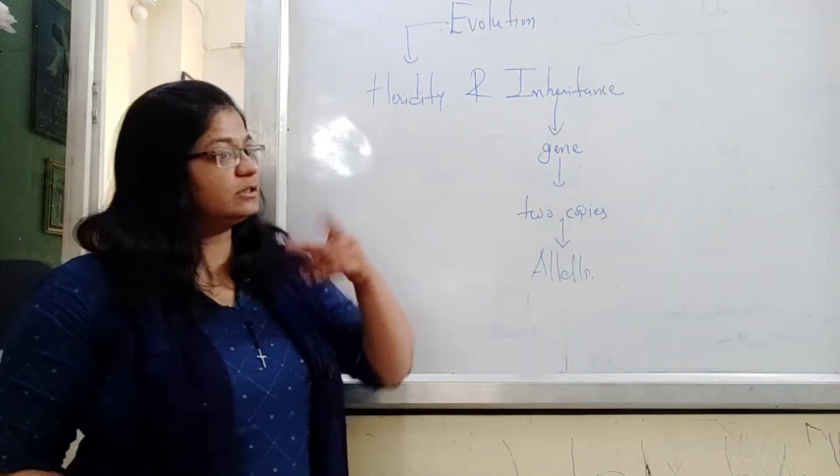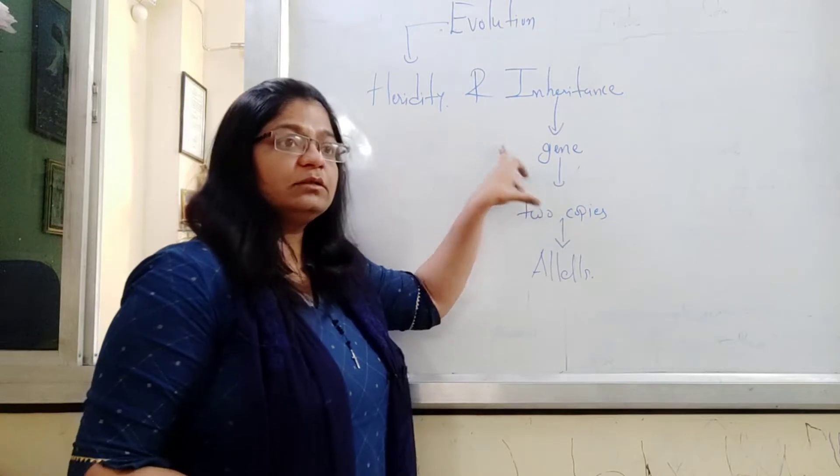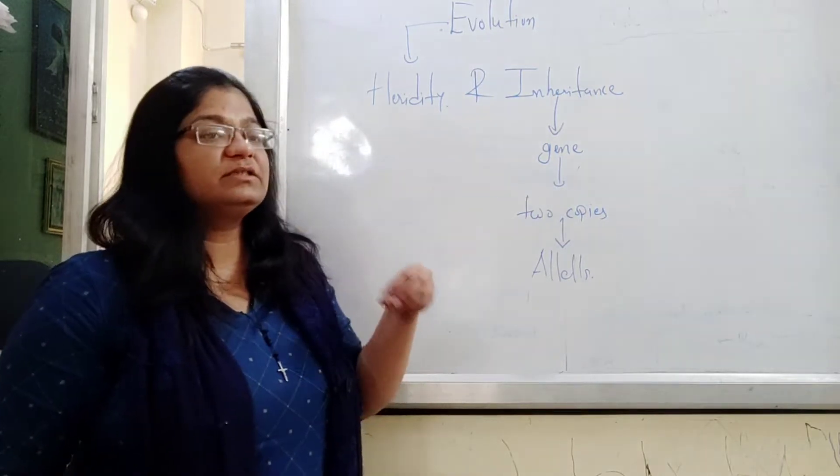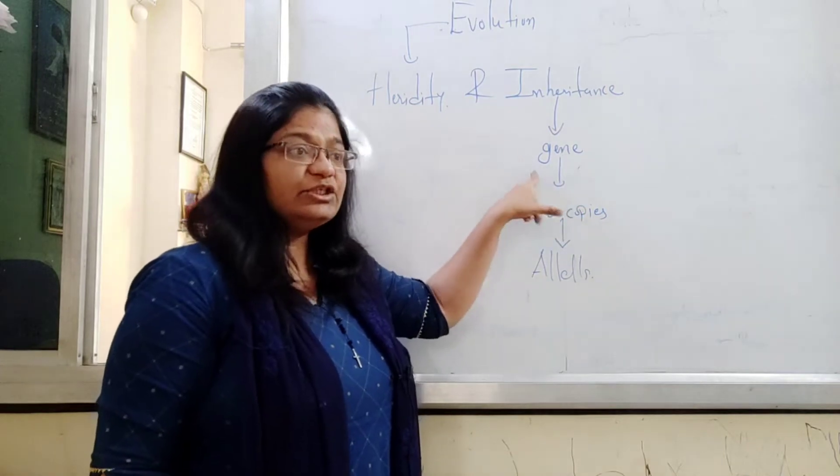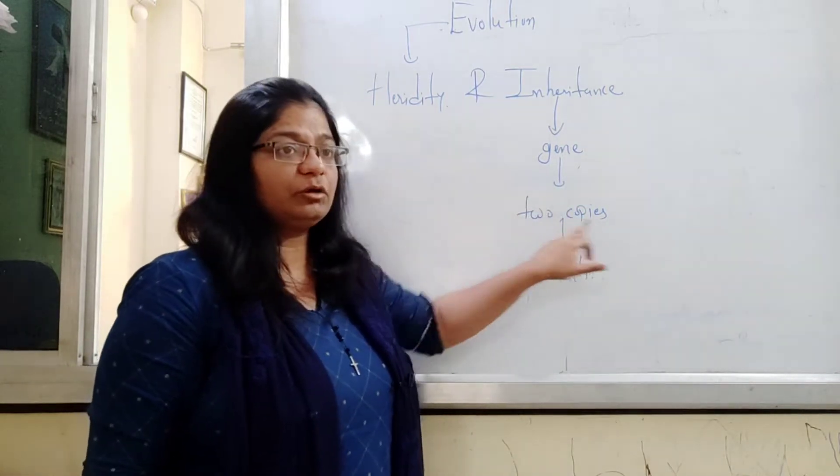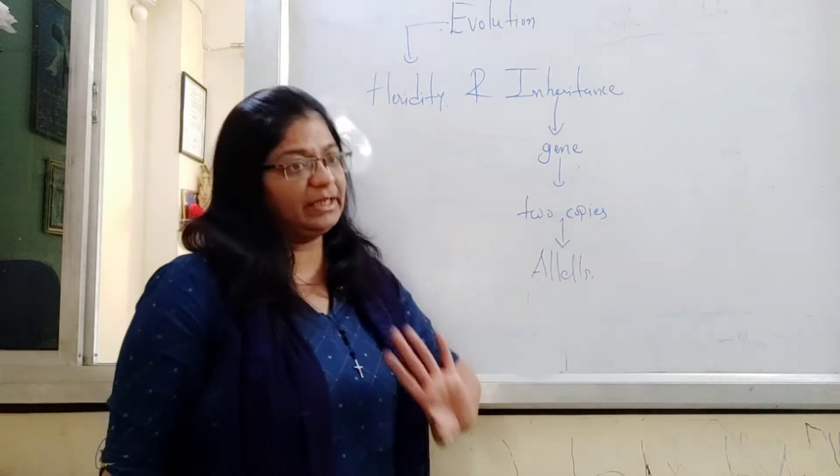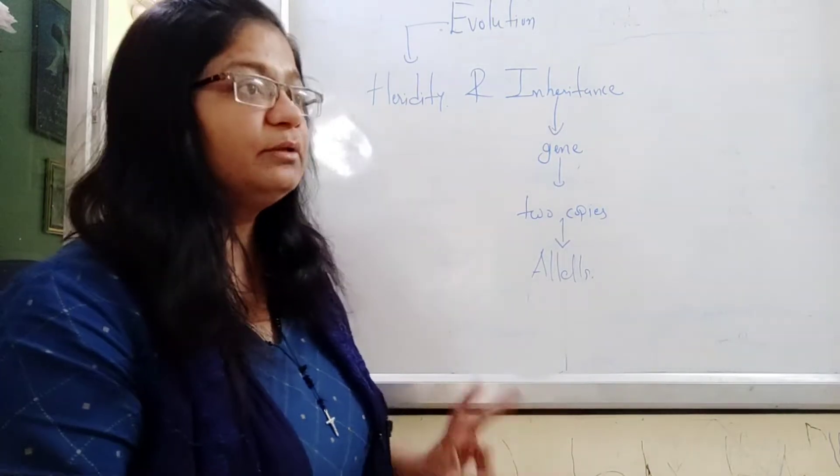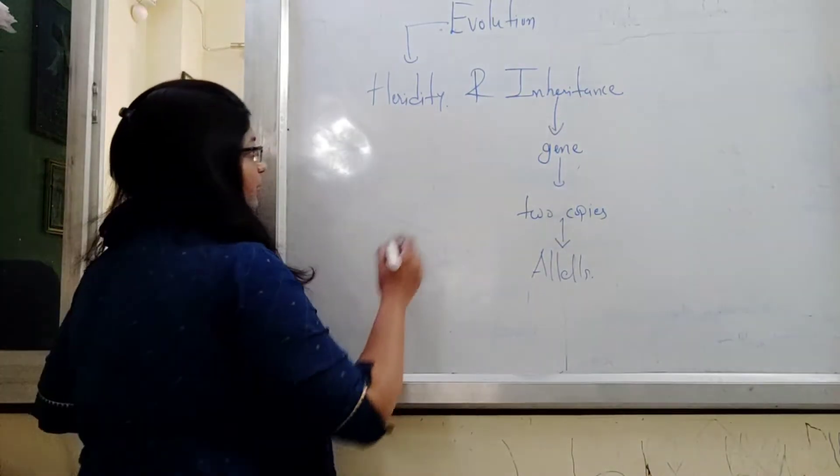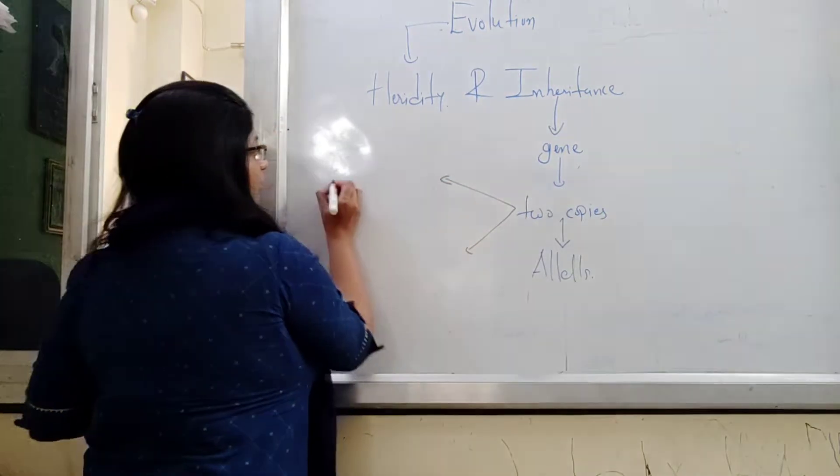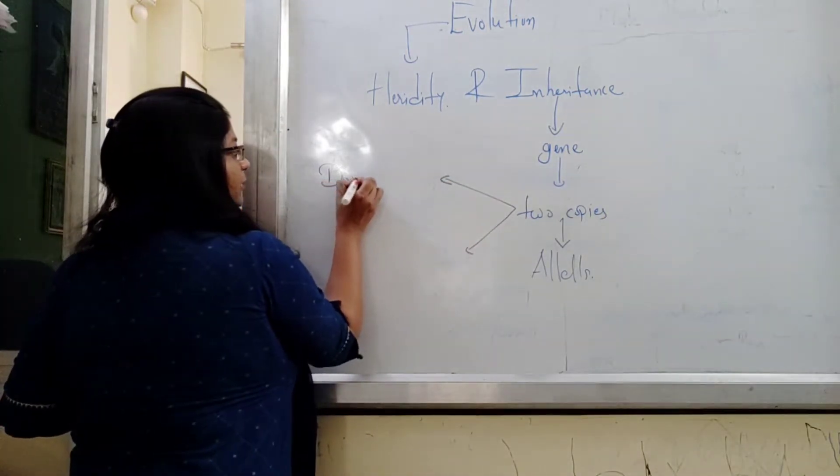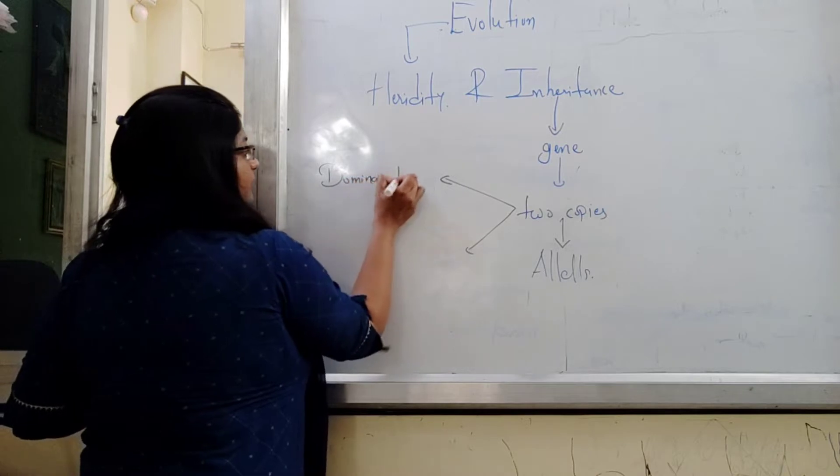Heredity is a phenomenon via which the characters are getting transferred from parents to progeny. Inheritance is a process - in the process, the tool or vehicle which is responsible for this transformation, they are called genes. Each and every character is having two copies of gene which are called alleles. Now as I told you that there are two characters, so let us understand about this thing - the two copies, we call them the character is dominant and recessive.